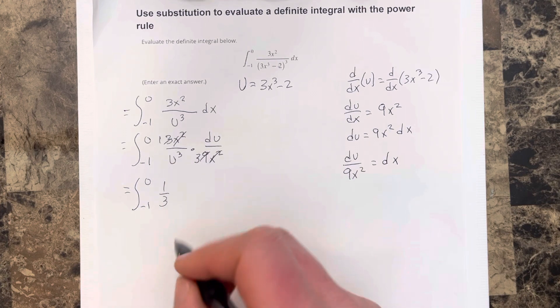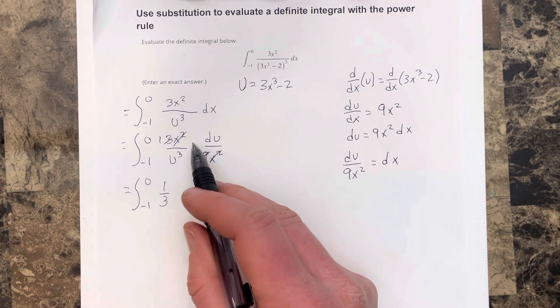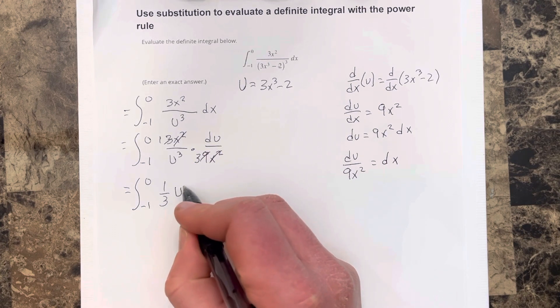1 divided by 3. And then I'm going to take the u and send it to the denominator. I'm going to bring it to the numerator, so that would be u to the negative 1 third du.